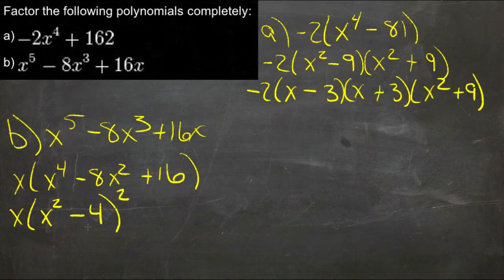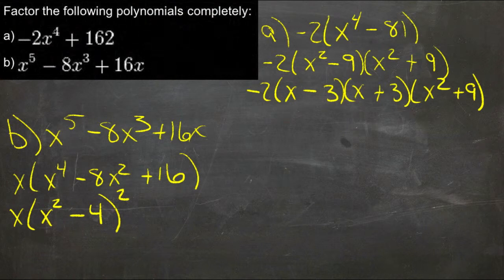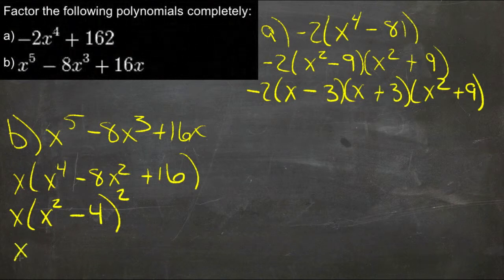And then each of those then, if we have x squared minus 4 squared, each of those then is another perfect difference of squares. So we could actually pull that apart again,